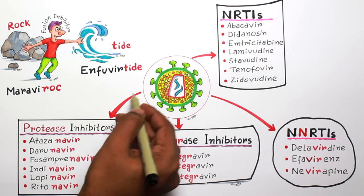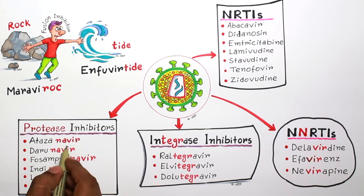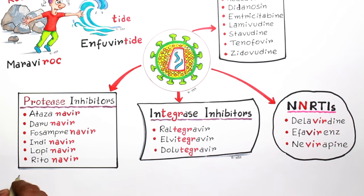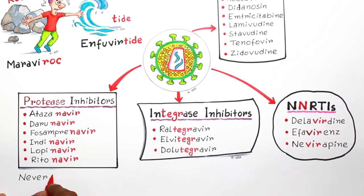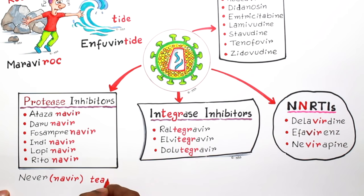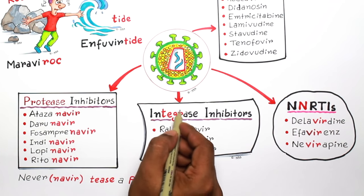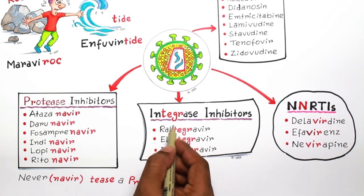The second group is protease inhibitors. Here you can see there is 'navir' at the end of the name, which is common for all of them. You can remember it with this mnemonic: 'never is a pro' — 'never' signifies 'navir' and 'pro' and 'teas' signifies 'protease'.